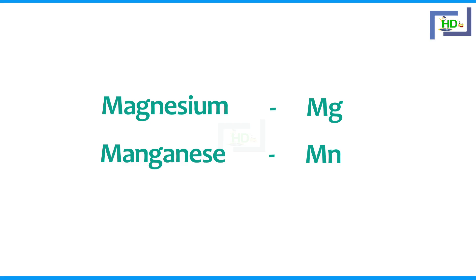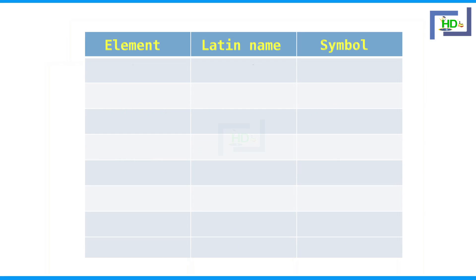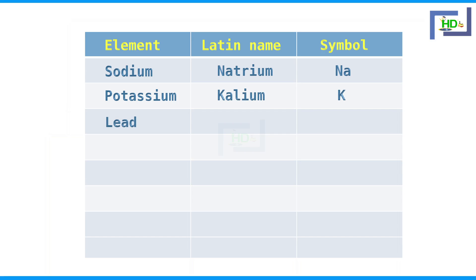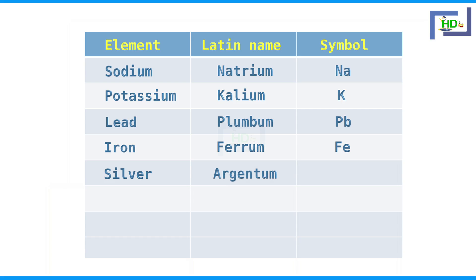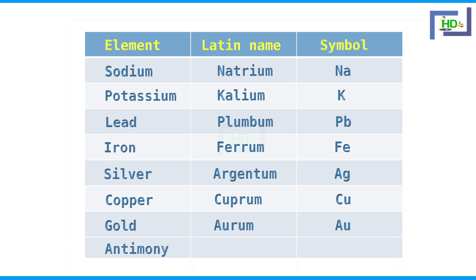For some elements, the symbols are taken from Latin names. For sodium, the Latin name is Natrium, and the symbol is Na. Potassium's Latin name is Kalium, and the symbol is K. Lead — Plumbum — Pb. Iron's Latin name is Ferrum, and the symbol is Fe. Silver's Latin name is Argentum, and the symbol is Ag. Copper's Latin name is Cuprum, and the symbol is Cu. Gold's Latin name is Aurum, and the symbol is Au. Antimony's Latin name is Stibium, and the symbol is Sb.